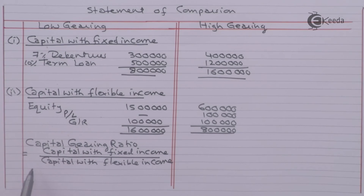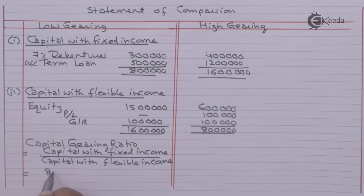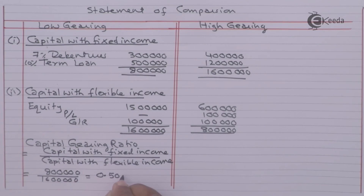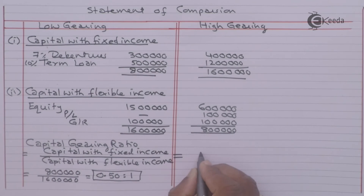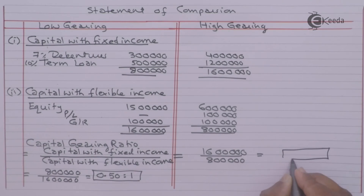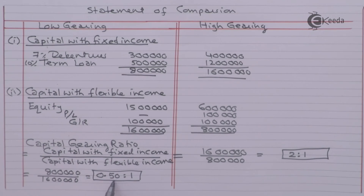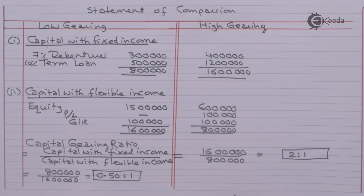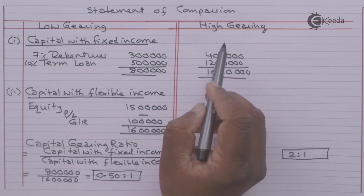The capital gearing ratio equals capital with fixed income divided by capital with flexible income. In the low gearing case, we get 0.50:1 — since the ratio is less than 1, it is a low geared company. In the high gearing case, we get 2:1 — since it is more than 1, it is considered a case of high gearing.